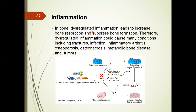In bone, dysregulated inflammation leads to increased bone resorption and suppresses bone formation. Therefore, dysregulated inflammation can cause many problems, including fractures, infection, inflammatory arthritis, osteoporosis, osteonecrosis, metabolic bone disease, and tumor. Inflammatory cytokines such as TNF-alpha can inhibit osteoblast differentiation for bone formation and subsequently induce osteoclast maturation for bone resorption.